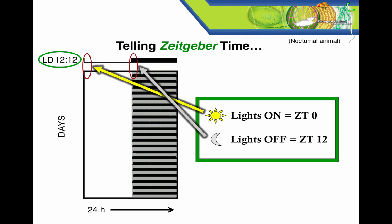For the most part, under a light-dark schedule, the circadian system will align itself to that schedule. So you can see the activity is occurring during the dark period for this nocturnal animal. And when subjective night is the same as environmental night, we call that entrainment to the light-dark schedule.